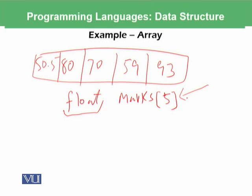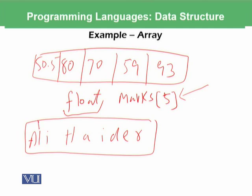Similarly, if you want to store the name Ali Heather, this means we need one, two, three, four, five, six, seven, eight, nine, ten.